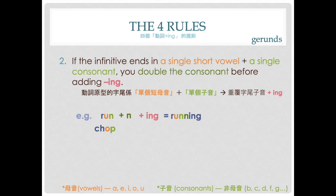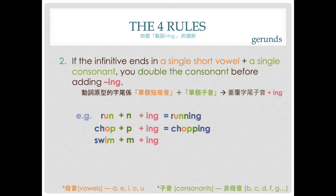Look at 'run' — the u is a short vowel sound, so you need to double the n, plus -ing, it becomes 'running' with two n's. 'Chop' — the o is a short vowel sound, so you need to add an extra p, then add -ing, it becomes 'chopping' with two p's. 'Swim' — the i is a short vowel sound, so you double the m, plus -ing, becomes 'swimming' with two m's. 'Get' — this is a short e sound, so you add an extra t, then add -ing, it becomes 'getting' with two t's.